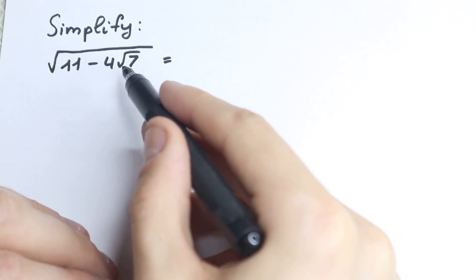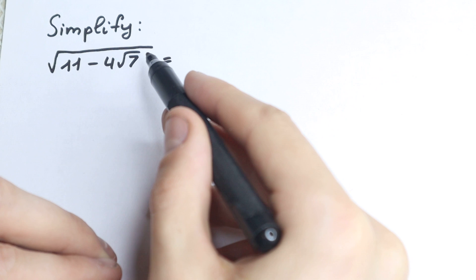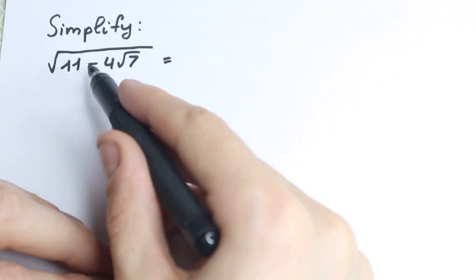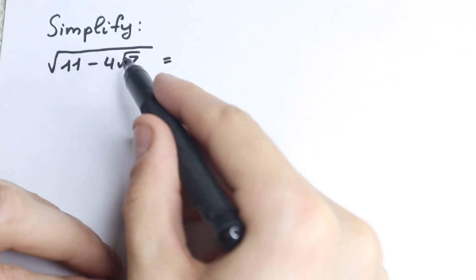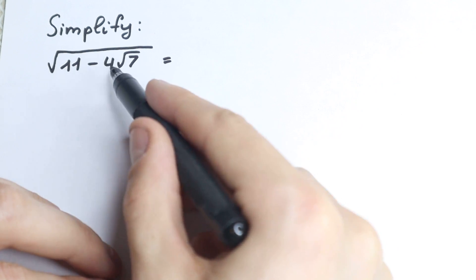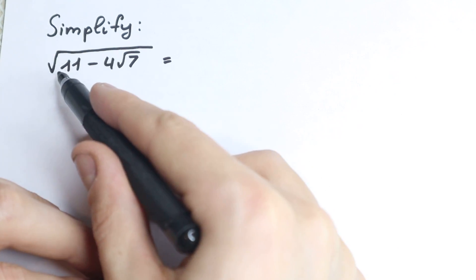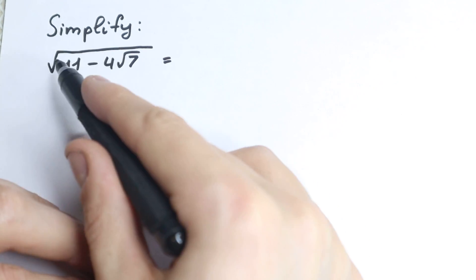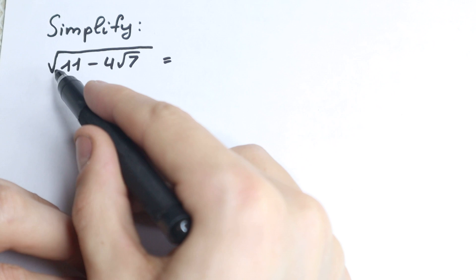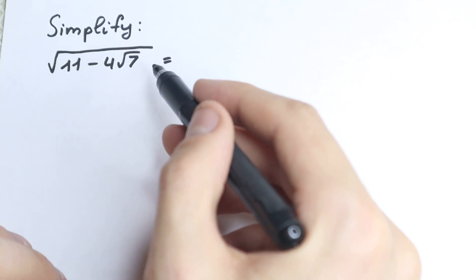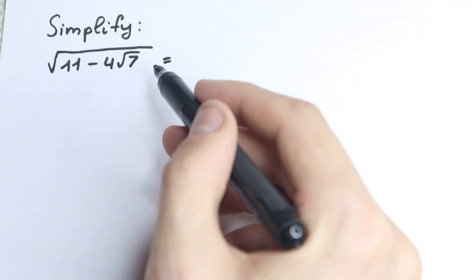On the first look we cannot simplify this because we don't have anything to cancel, subtract, or add. We have a square root, we have 11, so we cannot subtract it or apply the square root sign directly. We need to find a really clever trick.